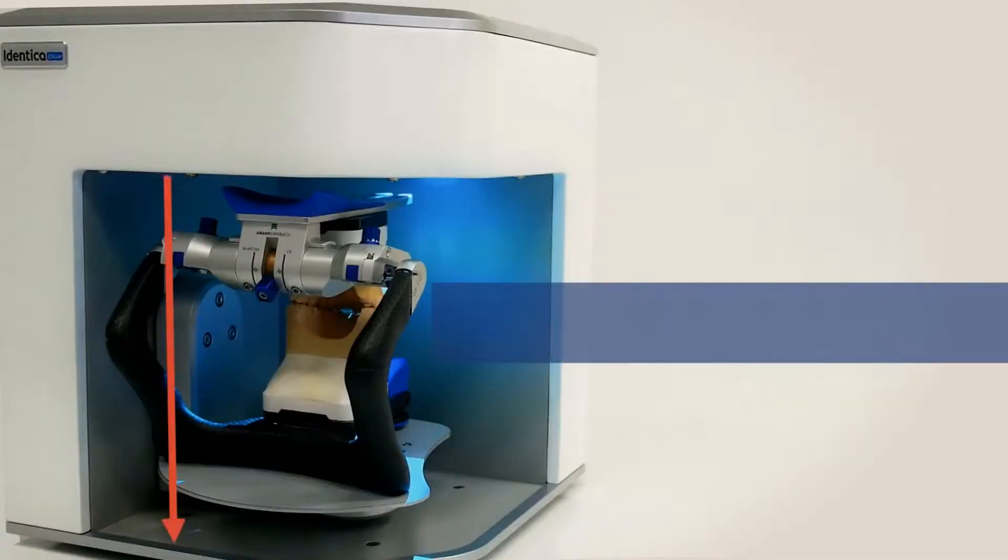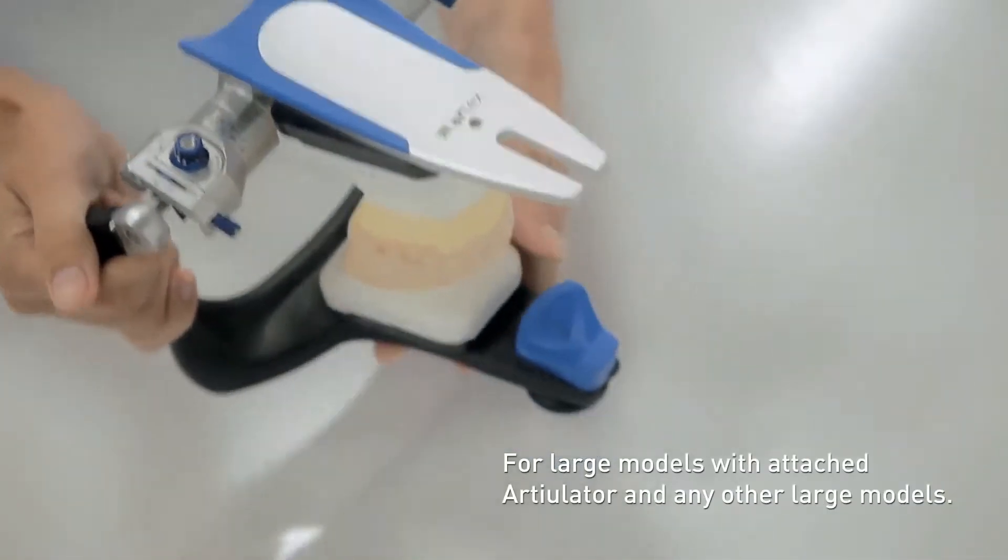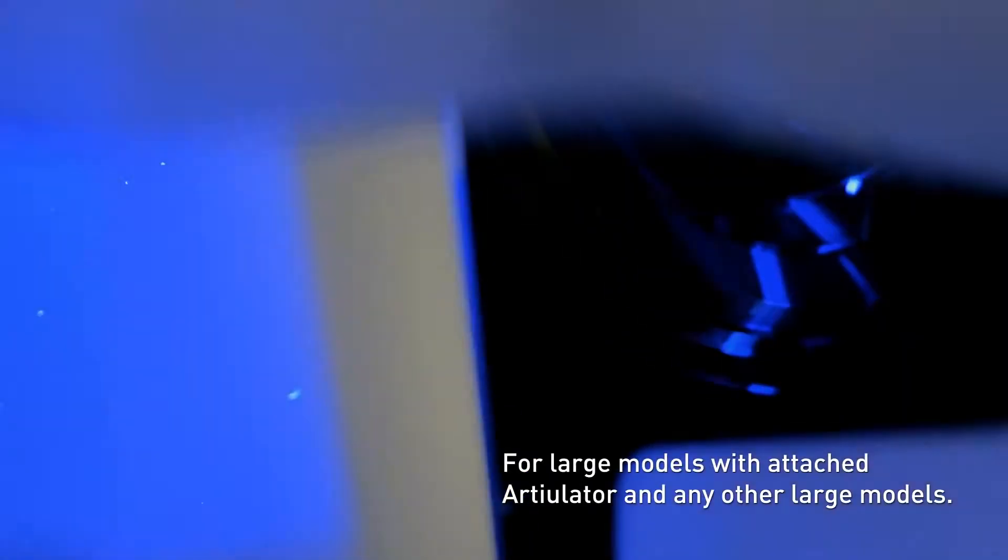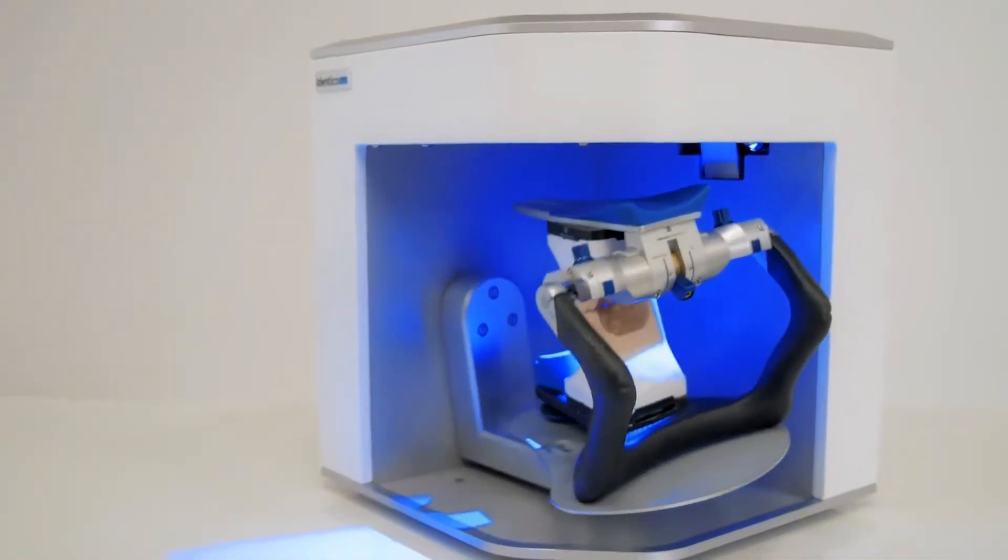The height of operational space of Identica Blue is now expanded to more than 21 millimeters. Identica Blue 2015 is now capable of scanning large articulated models as well as large impression trays much easier than ever.